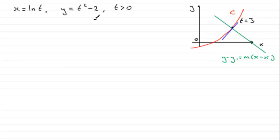As I said earlier, we need to find out what x1 and y1 are. So I'm going to work that out first of all. So when t equals 3, we've got x, which will be our x1, is going to be equal to the natural log of 3. And y will equal 3 squared, which is 9, 9 take away 2, gives us 7.